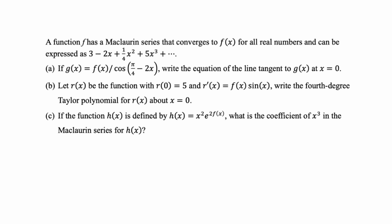There's not really a pattern there, but it goes on forever. Part A: if g(x) is f(x) over cosine of (π/4 minus 2x), write the equation of the line tangent to g(x) at x equals 0. Part B: let r(x) be the function with r(0) equals 5 and r prime equals f times sine of x — write the 4th degree Taylor polynomial for r(x) about x equals 0. Part C: if h(x) equals x squared times e to the 2f(x), what is the coefficient of x cubed in the Maclaurin series for h(x)?